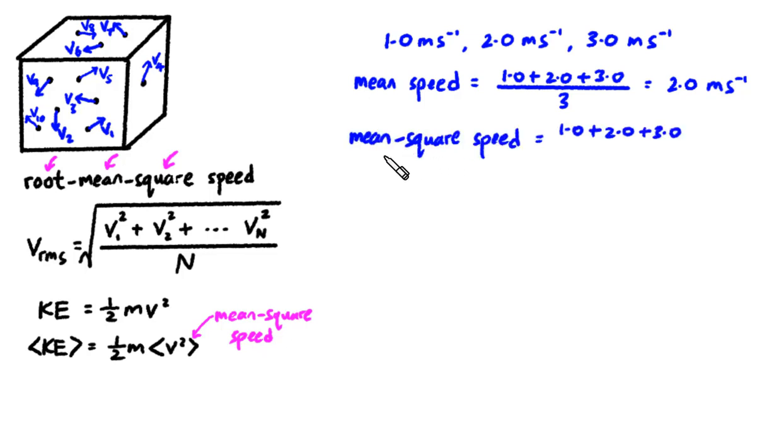On the other hand, if you are calculating the mean square speed, then you don't sum up the speeds. Instead, you sum up the squares of the speeds. And then divide it by 3, giving you 4.67 with a funny unit here.